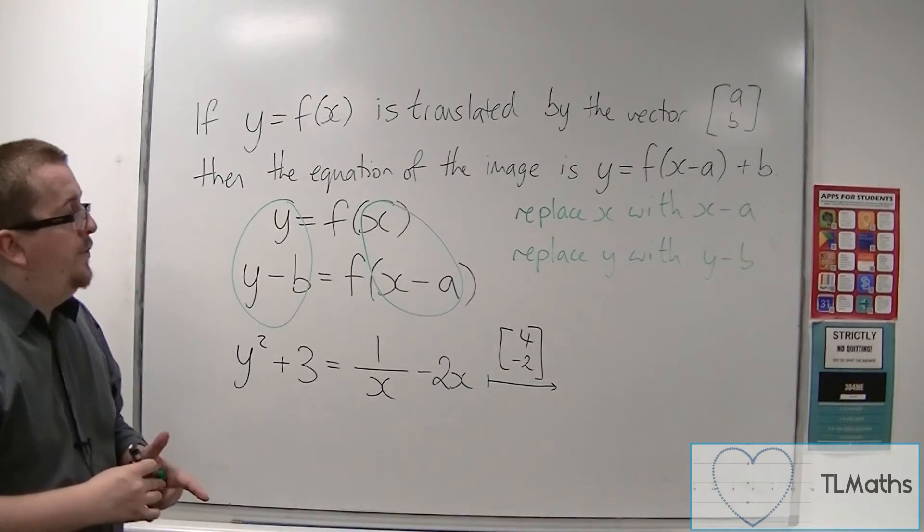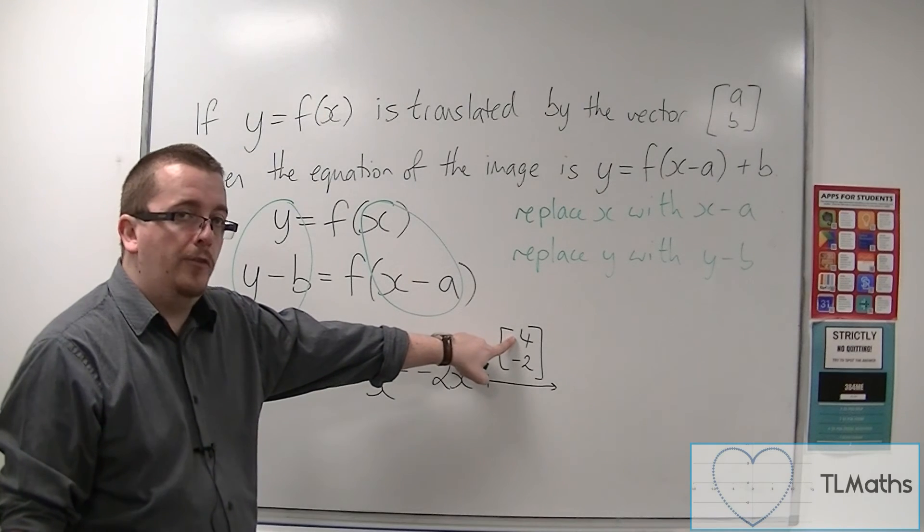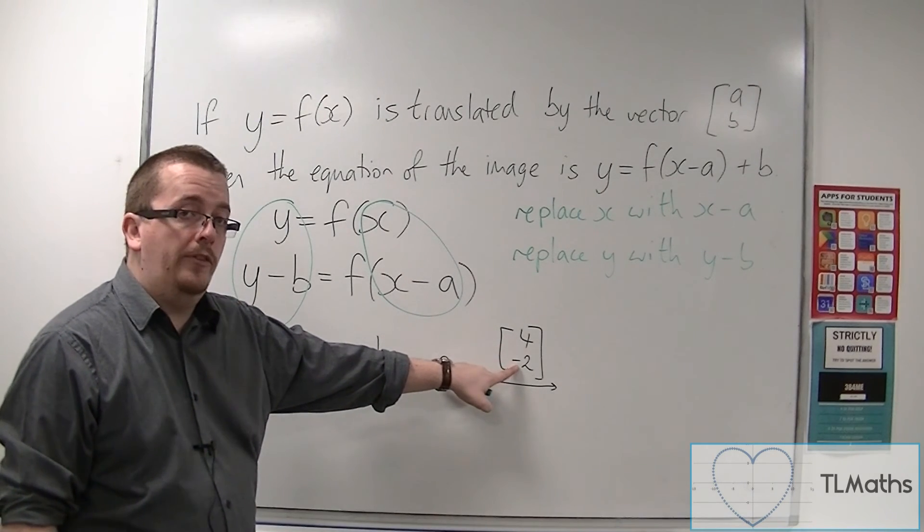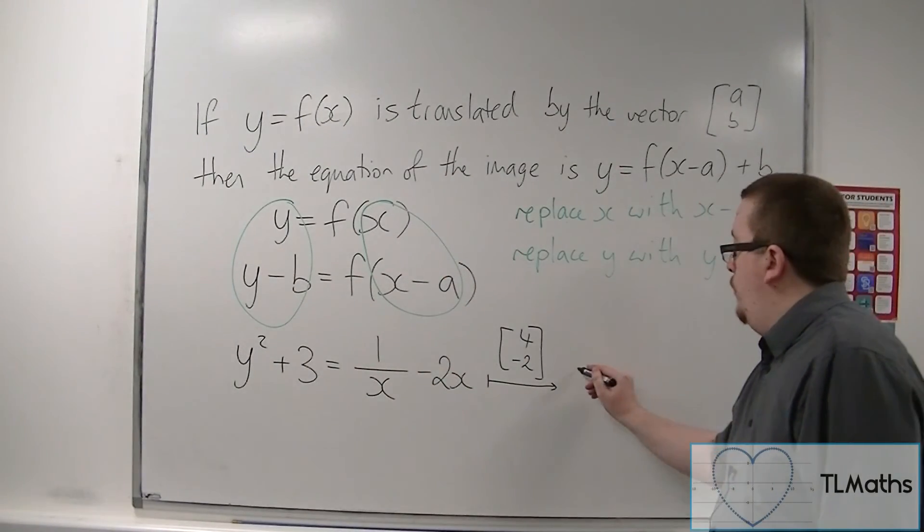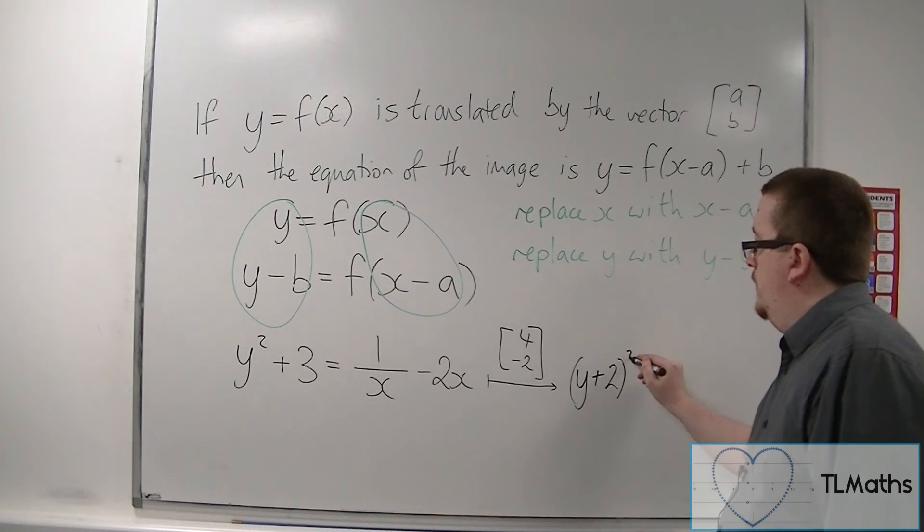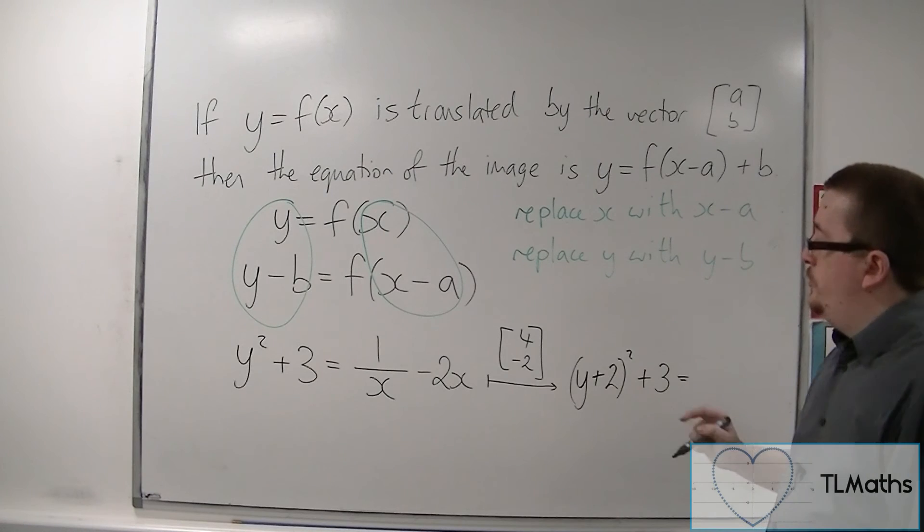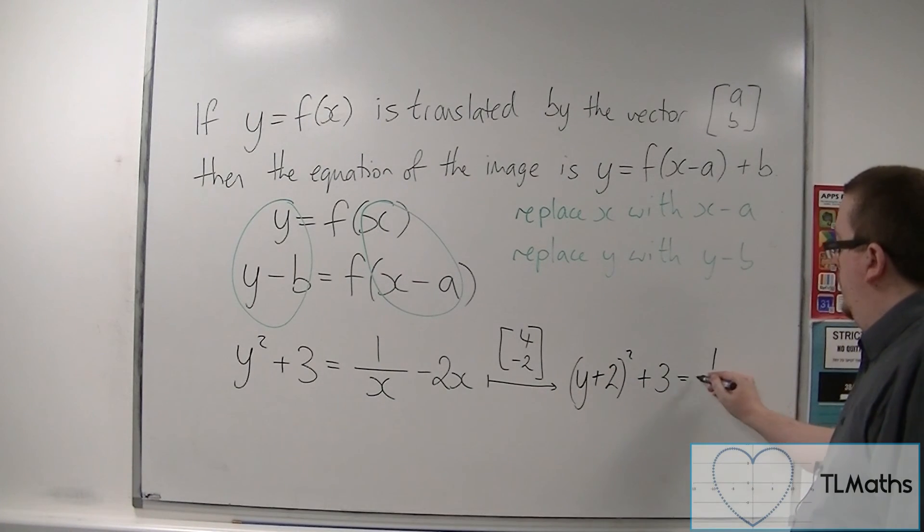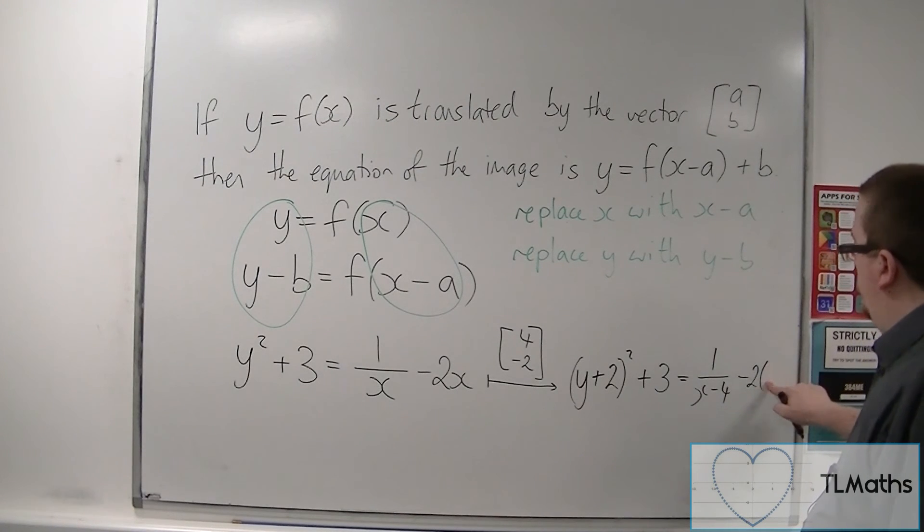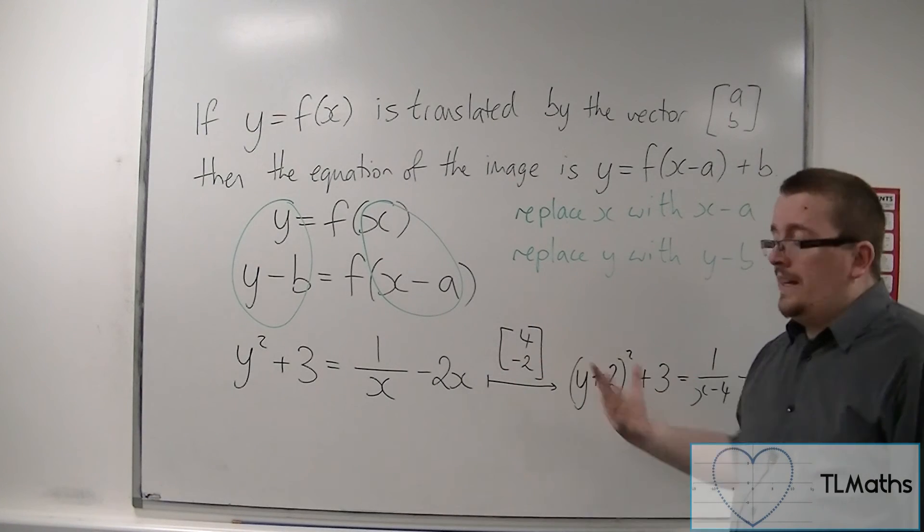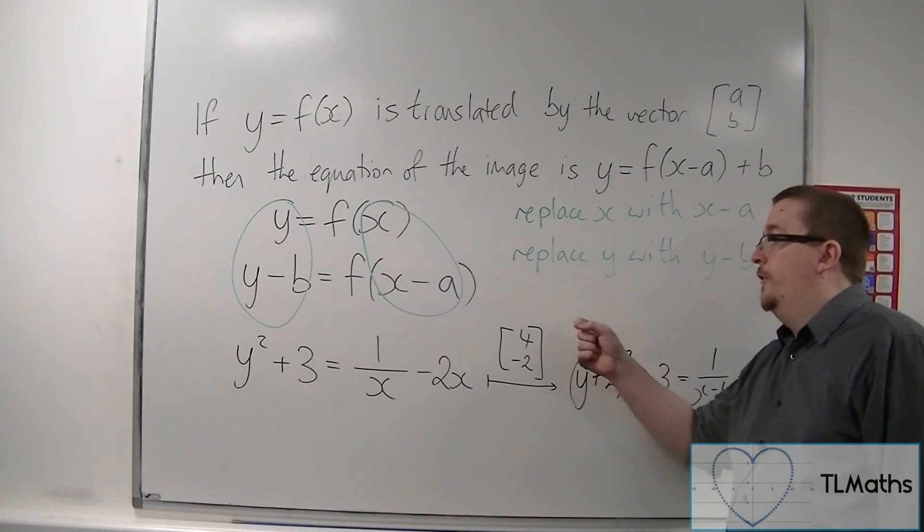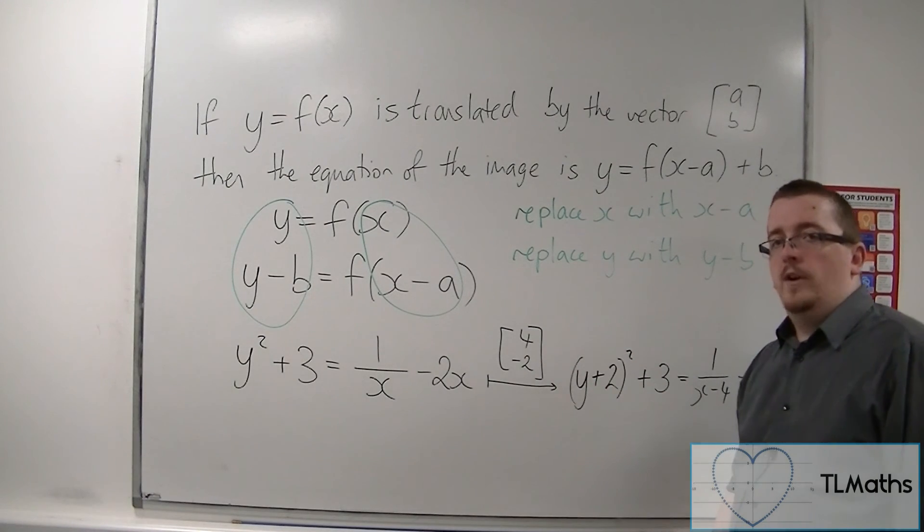then what I want to do is replace all the x's with x minus 4 and replace all the y's with y plus 2. So I'm going to replace the y's with y plus 2, I'm going to get (y plus 2) squared plus 3, and I'm going to replace the x's with x minus 4: 1 over (x minus 4) take away 2 lots of—sorry—x minus 4. And this would be the same curve, exactly the same shape, but translated 4 along in the x direction and 2 down in the y direction.